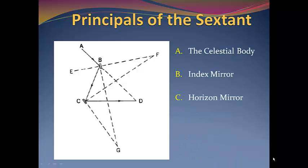The horizon mirror shows both the horizon and the reflected light of the body to D, the telescope, where we make our observation.